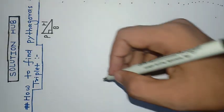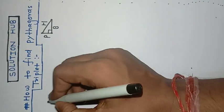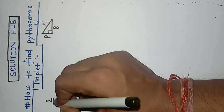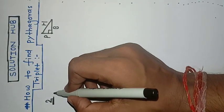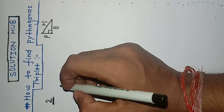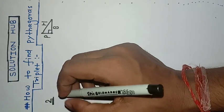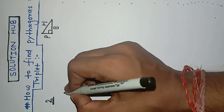If a number is given, say 2, and we have to find the Pythagorean triplet for this number, there is a formula to find out the Pythagorean triplet.